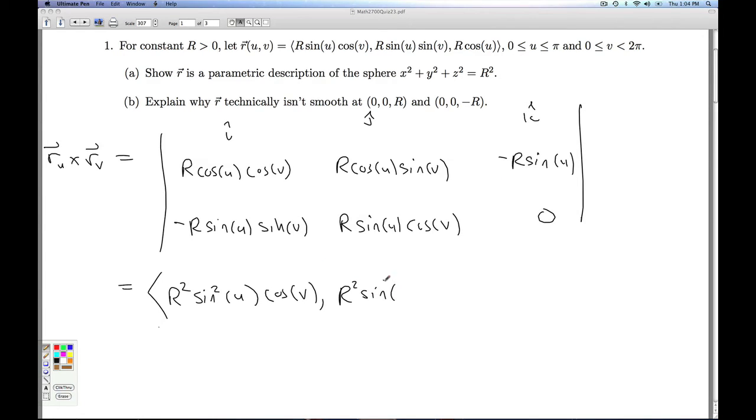And last but not least, I wipe out the row and column that k hat is in. I get r squared cosine u sine u cosine squared v minus a negative r squared cosine u sine u sine squared v. So I'm going to get an r squared cosine u sine u cosine squared v plus an r squared cosine u sine u sine squared v. And we'll get Pythagorean magic to get r squared sine u cosine u.